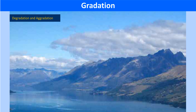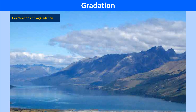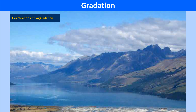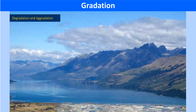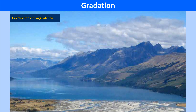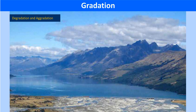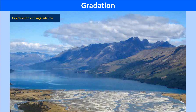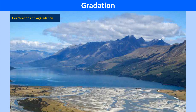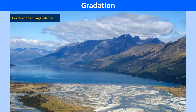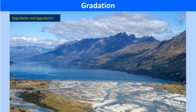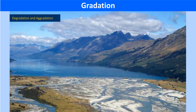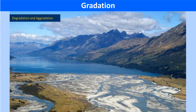As a result, the fine balance in the surface of the earth continues to remain unaffected by them. The major agents of gradation that impact the surface of the earth are discussed below.